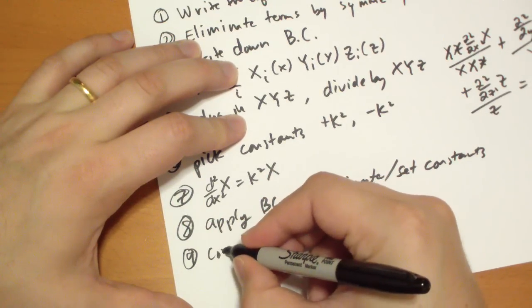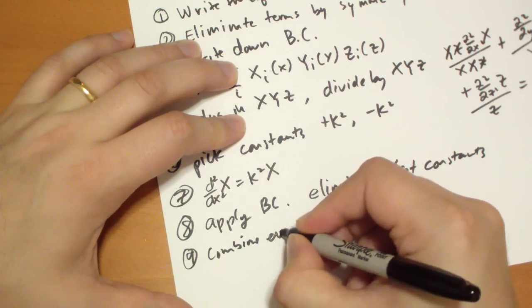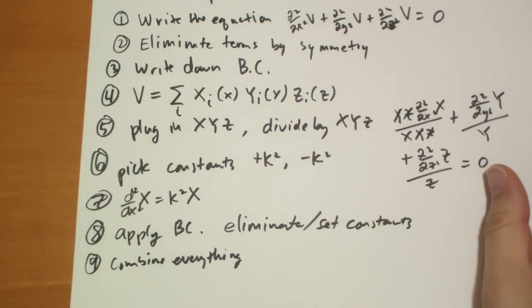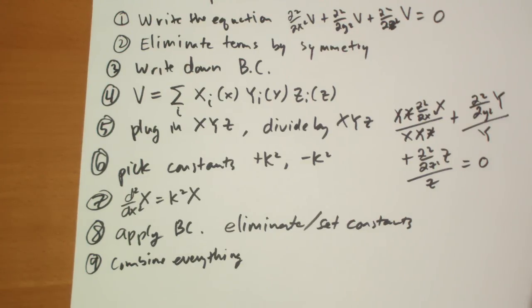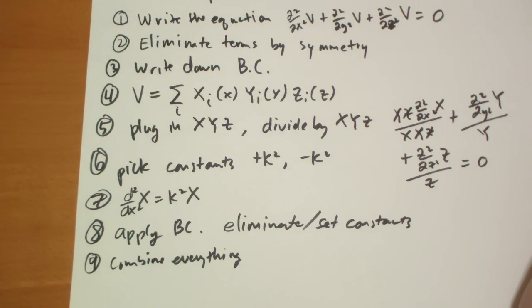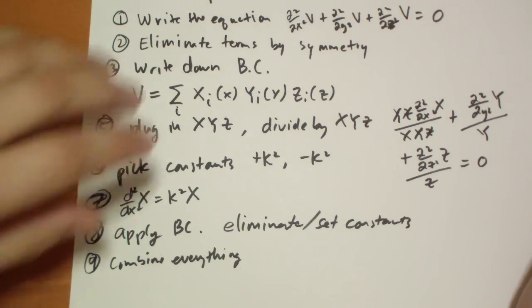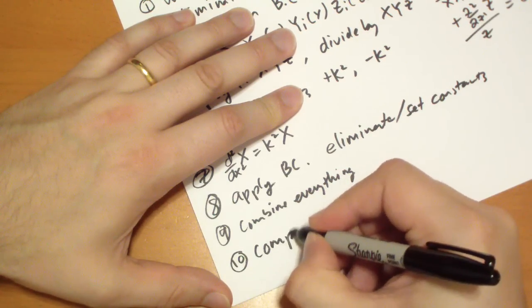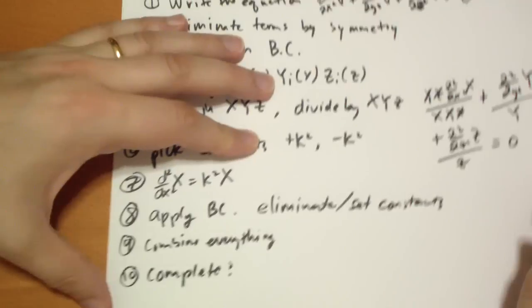Finally, you combine everything back together. Some of the constants will be multiplied with each other. In that case, you just use a single constant for the multiplication of the two. And then hopefully, at that point, you have some complete solution.